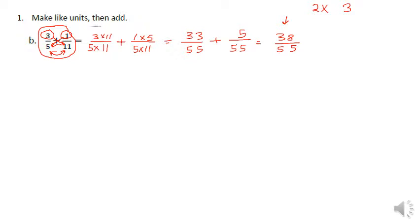Next, is it divisible by three? The quick method we determined is to add the digits. On the top, three plus eight is 11, and 11 is not a multiple of three, so 38 is not a multiple of three. Five plus five is 10, and 10 is not a multiple of three, so the whole number cannot be a multiple of three.